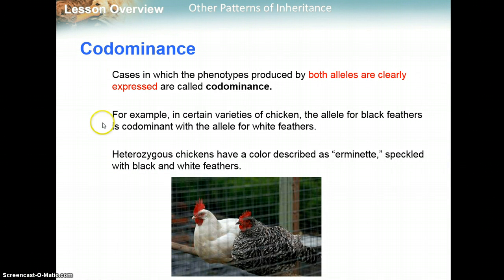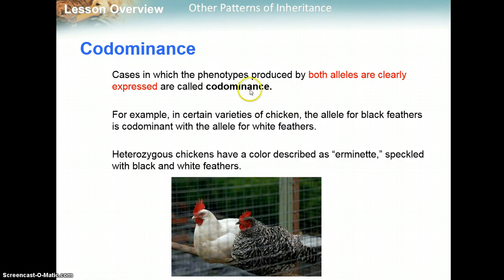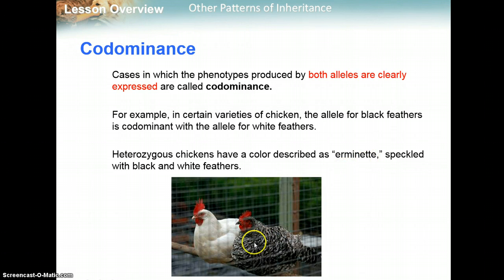Another type is called codominance. These are cases where both alleles are clearly expressed — that's called codominance. Both alleles are expressed at the same time. For example, in certain types of chicken, the allele for black feathers is codominant with the allele for white feathers. The heterozygous genotype has a phenotype where you see both alleles being expressed at the same time — both black and white feathers.